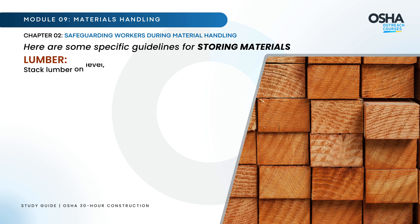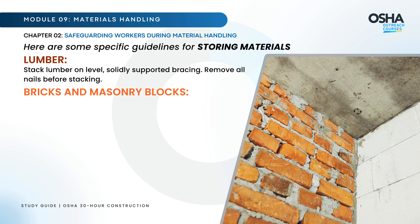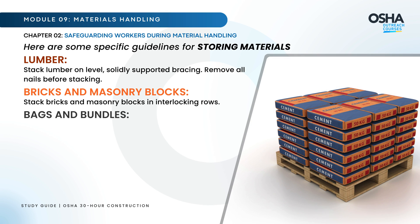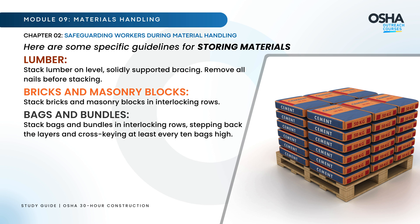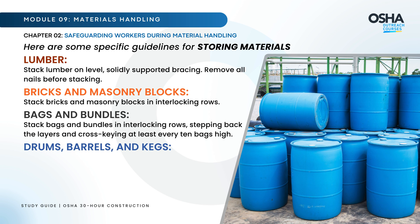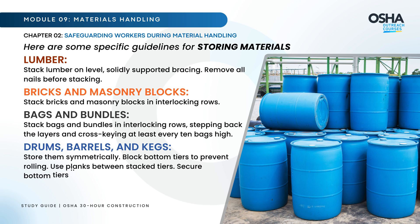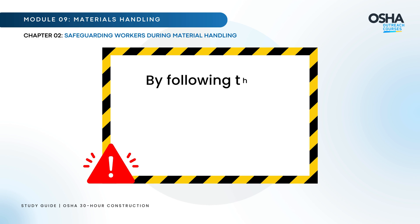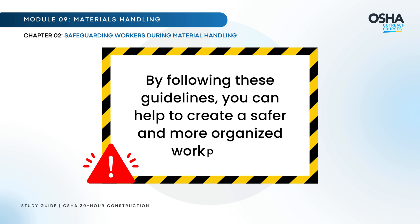Lumber: stack lumber on level, solidly supported bracing and remove all nails before stacking. Bricks and masonry blocks: stack in interlocking rows. Bags and bundles: stack in interlocking rows, stepping back the layers and cross-keying at least every 10 bags high. Drums, barrels, and kegs: store symmetrically, block bottom tiers to prevent rolling, use planks between stacked tiers, and secure bottom tiers if stacks are over two tiers high.